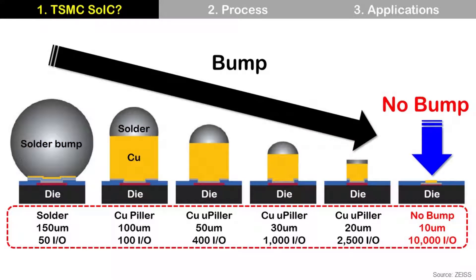This is a simple comparison for better understanding. From the left, solder bumps with 150-micrometer bump pitch can make 50 I/O per square millimeter. For 100-micrometer bump pitch, it is difficult to use solder bumps anymore because neighboring solder bumps can touch each other during the reflow process as they melt. So copper pillar is used, because copper does not melt during reflow due to its very high melting temperature. 100-micrometer bump pitch can make 100 I/O per square millimeter.